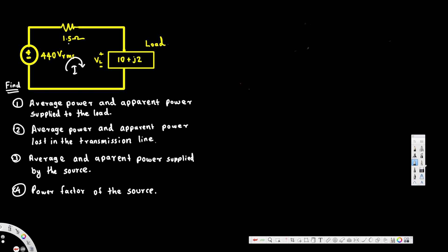The first part asks for average power and apparent power supplied to the load. To do this, we first need to find the current. We apply KVL: negative 440 at angle 0° (no angle provided), then through the 1.5 ohm resistor, giving us (1 + 1.5)I, and then (10 + j2) times I, all equal to zero.